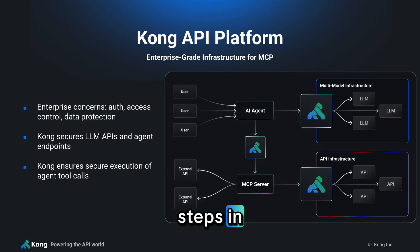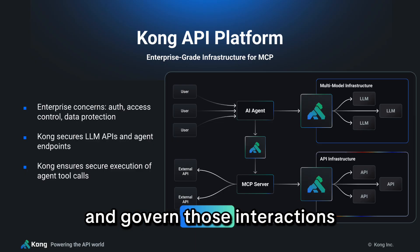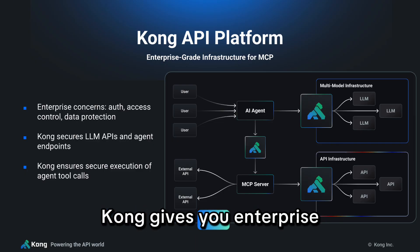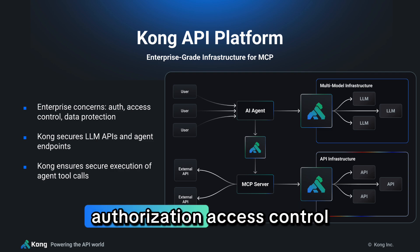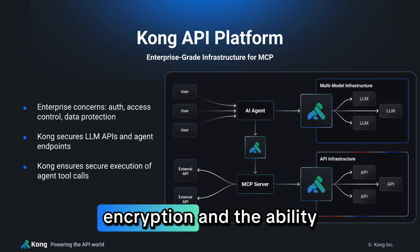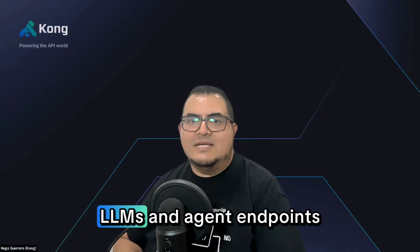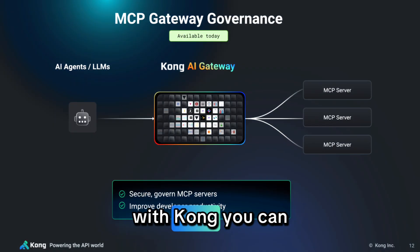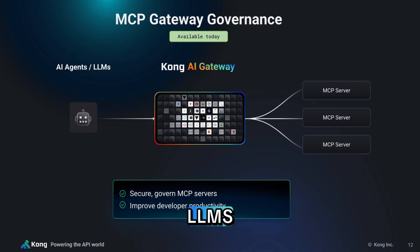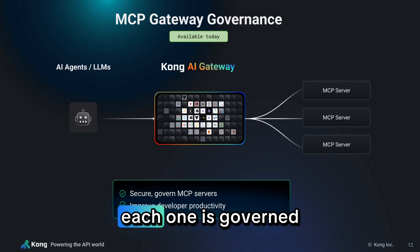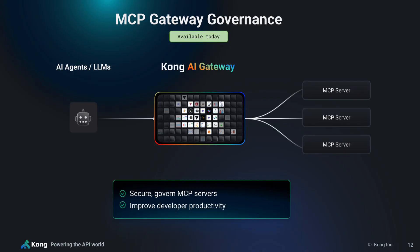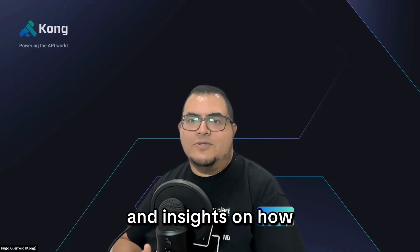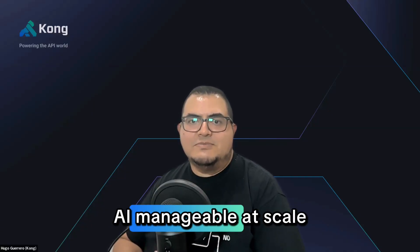This is where Kong steps in. If you want to use MCP in the real world, you need to protect and govern those interactions. Kong gives you enterprise-grade infrastructure: authorization, access control, encryption, and the ability to safely expose LLMs and agent endpoints. It brings governance and structure to your AI systems. With Kong, you can deploy and manage multiple LLMs, agents, and MCP servers in production — each one governed, secure, and visible to your team. You've got guardrails for how AI tools can be used and insights on how they're being used. This is what makes AI manageable at scale.